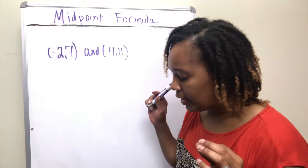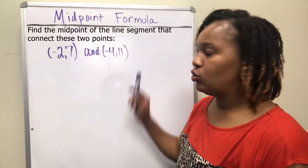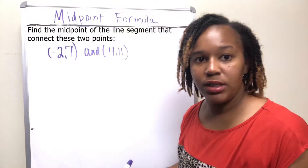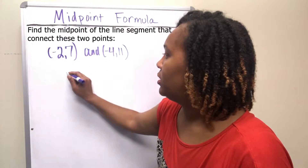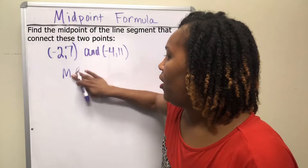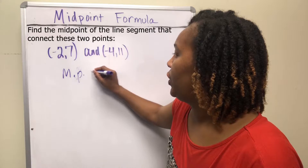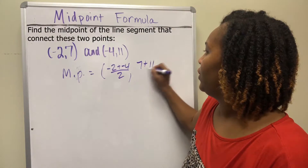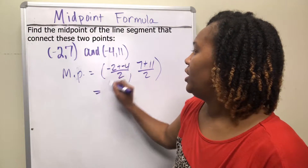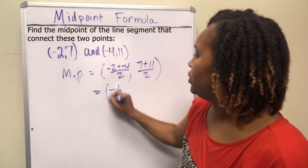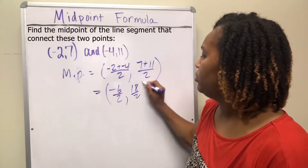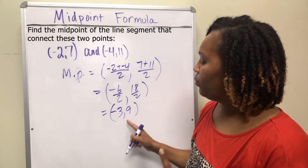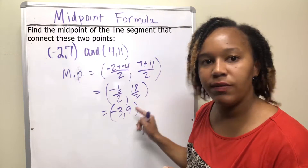For this example, we want to find the midpoint of the line segment that connects the two points (-2, 7) and (-4, 11). We just want to take the average of the x's and the average of the y's. Adding the two x's: negative 2 plus negative 4 gives negative 6 over 2. Adding the two y's: 7 plus 11 gives 18 over 2. That becomes negative 3 and 9. So the point directly in the middle of that line segment is (-3, 9).